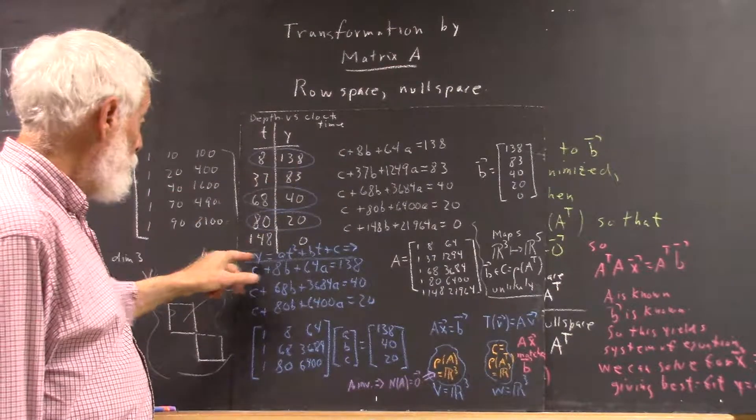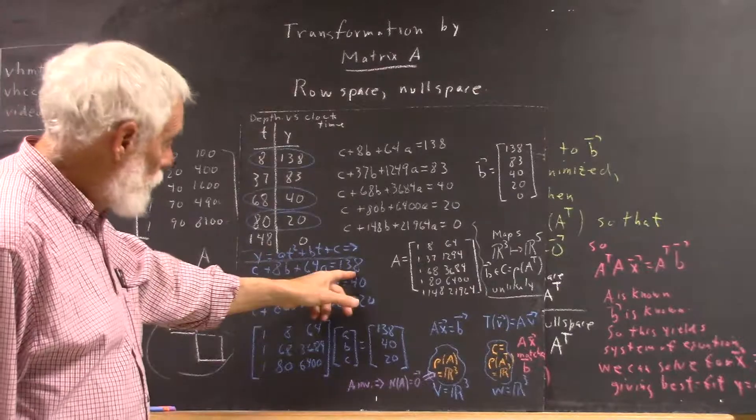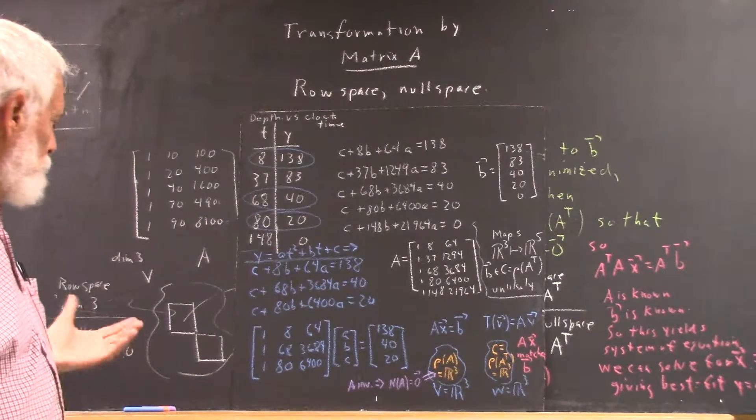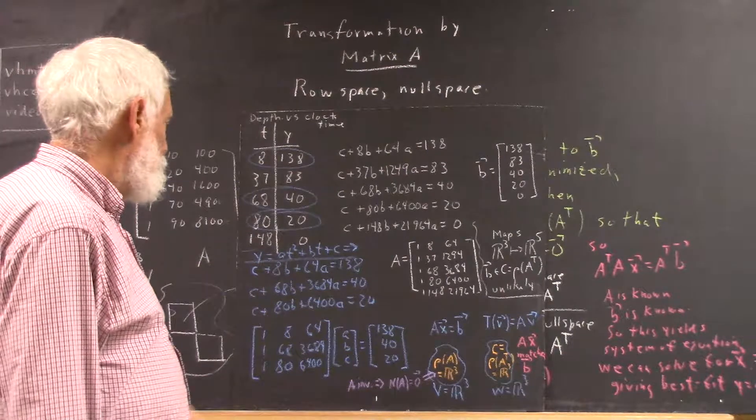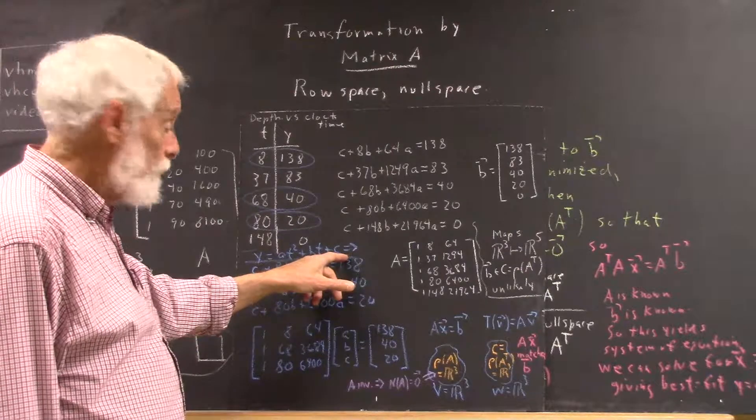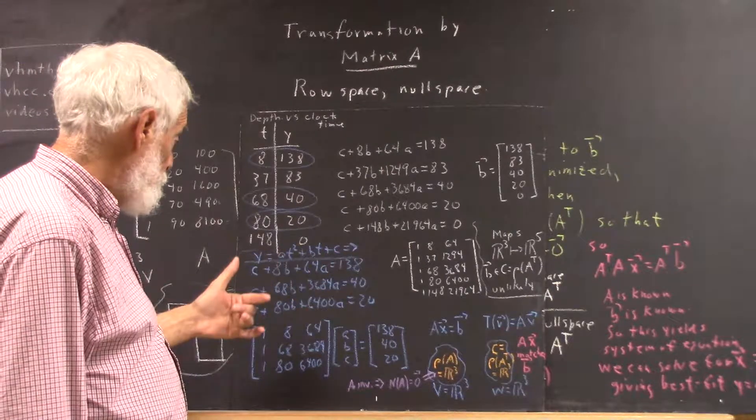We plug in 138 for y, so we get 138, and I've got y on this side rather than this side for reasons that become apparent. And I start off with c, then b, then a, so I've got these three terms in reverse order.